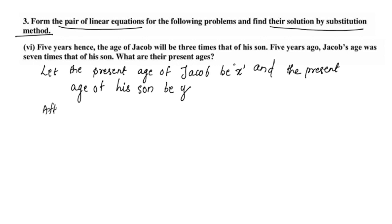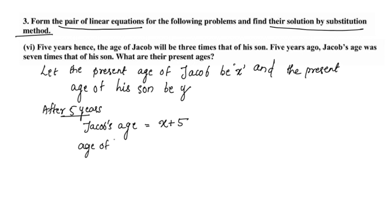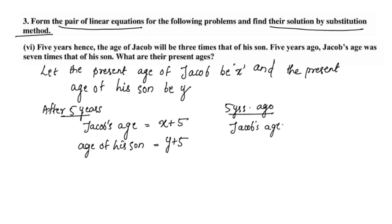After 5 years, Jacob's age will be x plus 5, and his son's age will be y plus 5. Five years ago, Jacob's age was x minus 5, and his son's age was y minus 5.